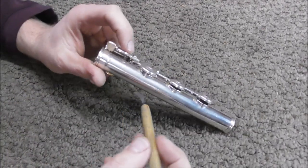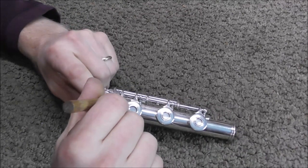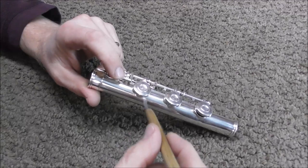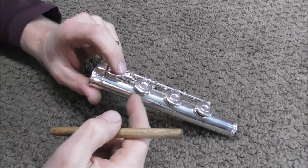And on a flute it works the same way. You go all the way around the pad and if there is anywhere where you can pull it out without any tension then you know that that is not seated there.